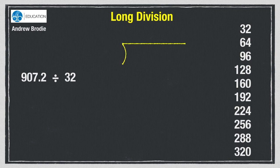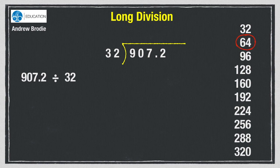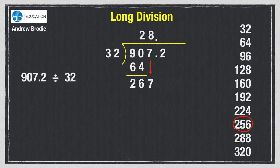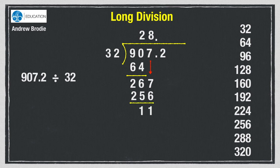Write 907.2 in the bus shelter and 32 on the outside. 32 into nine won't go so we look at 90. We haven't got enough to get three 32s but we can get two. Two 32s are 64 so we write two on the answer line and the 64 under the 90. Then subtract to get 26. Bring down the seven so now we have 267. The highest number in the list less than 267 is 256, which is the eighth number down, so eight 32s are 256 and we write eight on the answer line. We also put a decimal point on the answer line to match the one in the question. Write the 256 under the 267 and subtract — seven take six is one, six take five is one, so we've got 11.